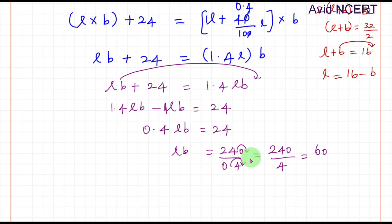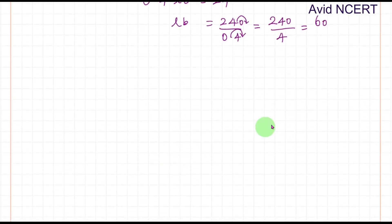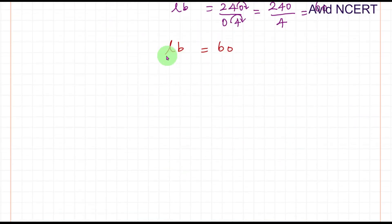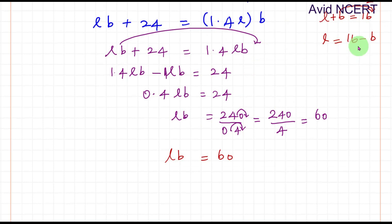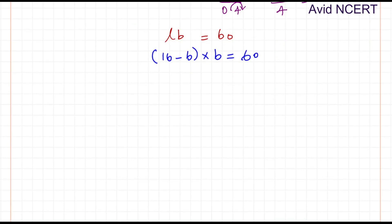Substituting the value of L in the equation LB equals 60: (16 minus B) times B equals 60. So 16B minus B squared equals 60, which we rearrange to equal zero.